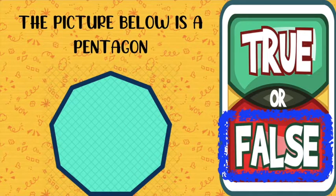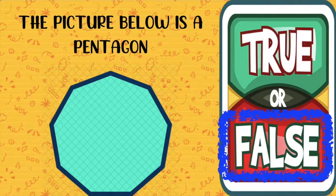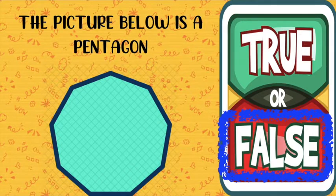So let's count the sides of this polygon: 1, 2, 3, 4, 5, 6, 7, 8, 9. So it has 9 sides. Therefore, it is nonagon.